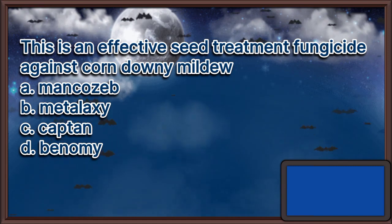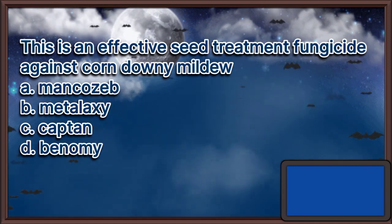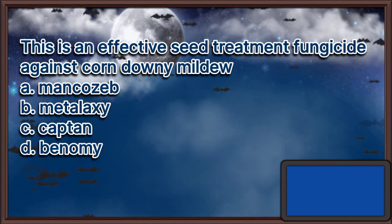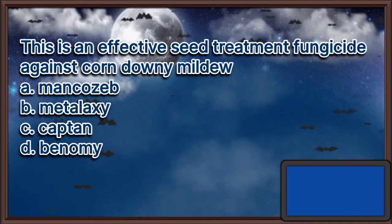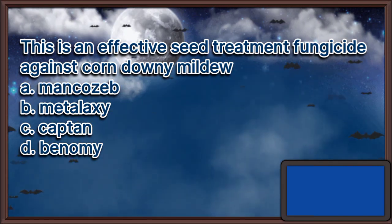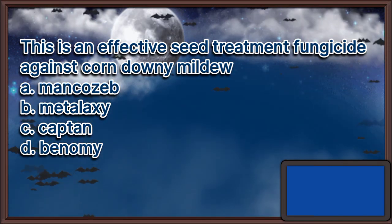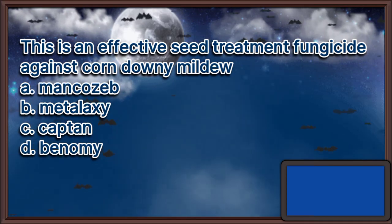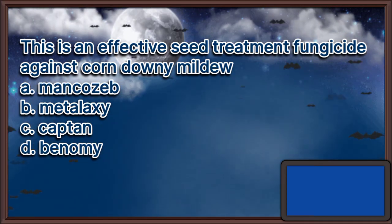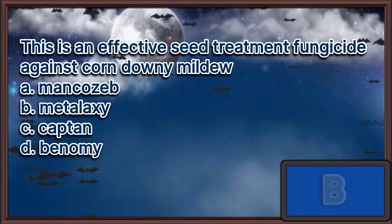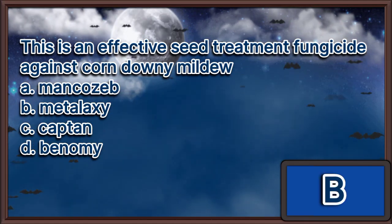This is an effective seed treatment fungicide against corn downy mildew. A. Mancozeb. B. Metalaxyl. C. Captan. D. Benomyl. The answer is letter B.